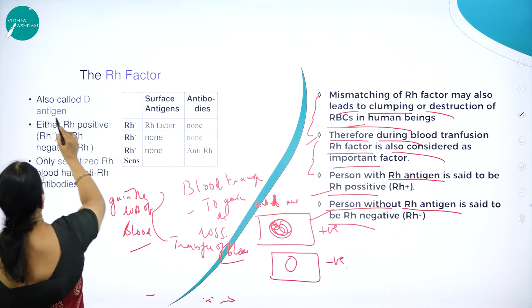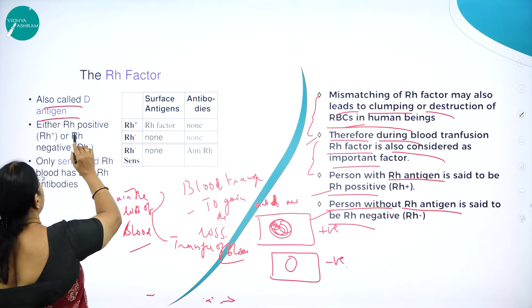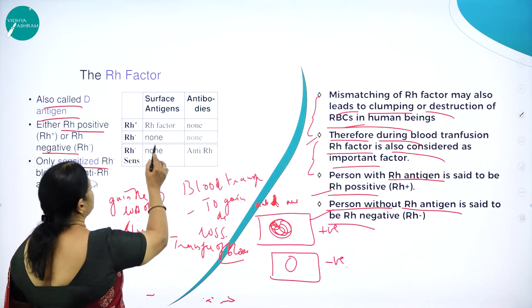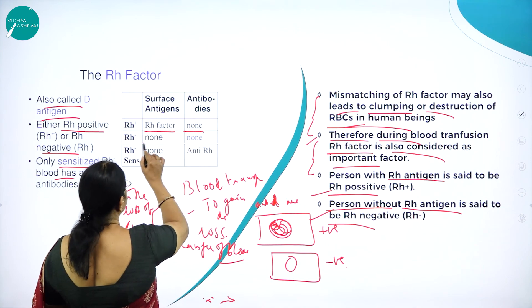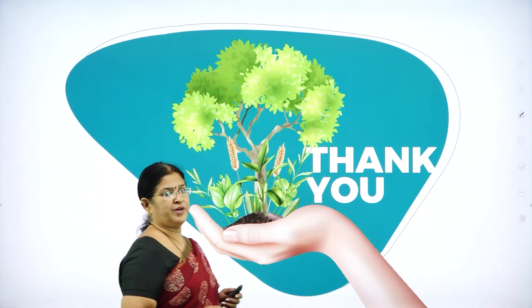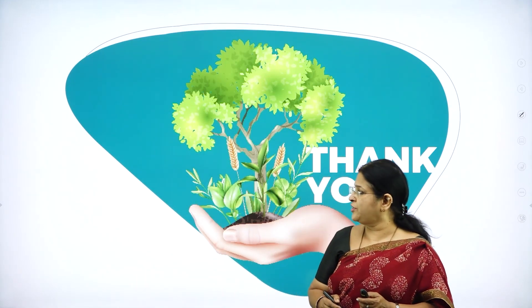The RH factor is also called anti-D or D antigen. Either RH positive or RH negative determination is based on sensitization. This is a very important concept from an examination point of view and also for general knowledge. Hope you have understood all the concepts explained in this session of Body Fluids and Circulation. I'll be back in the coming session with more interesting concepts. Till then, goodbye and thank you.